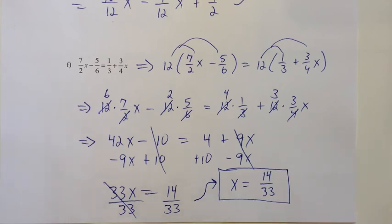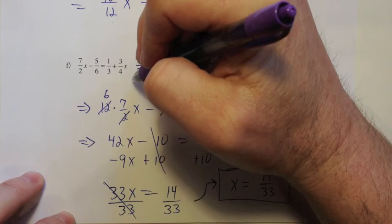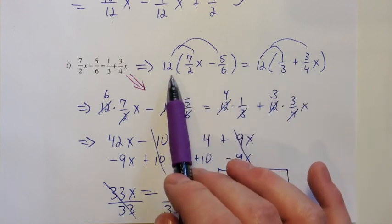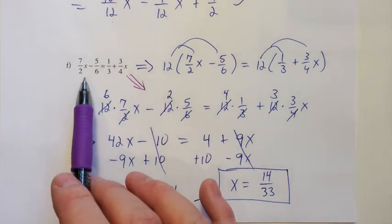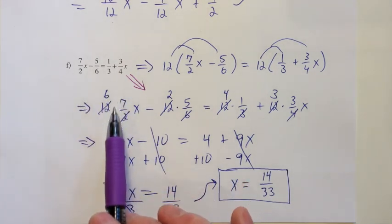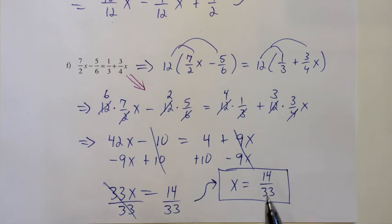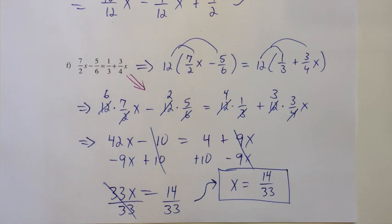One last note: a common shortcut is to skip writing out the '12 times both sides' step and just go straight to multiplying every term by 12 directly, which removes one line of work. Also, for this answer, we'd probably want to leave it as a fraction. Keep an eye on MyMathLab: if it says 'enter a fraction or an integer,' enter it that way. If it says to enter a decimal with rounding directions, then divide on your calculator. We started with fractions, so expect a fraction answer unless told otherwise.